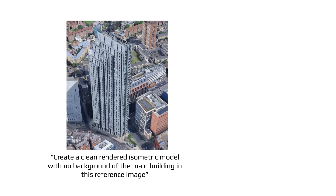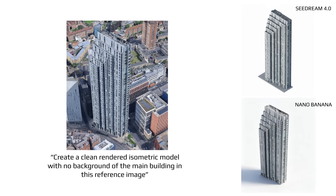Now for some 3D — specifically creating 3D isometrics, which are great to use in AI 3D workflows. The prompt is: 'Create a clean rendered isometric model with no background of the main building in this reference image.' Seadream produced a very clean image with no background, no shadows, and no perspective distortion. Nano Banana on the other hand added some perspective on the form, a tint to the background, and some shadow. For a cleaner image, Seadream is the winner.